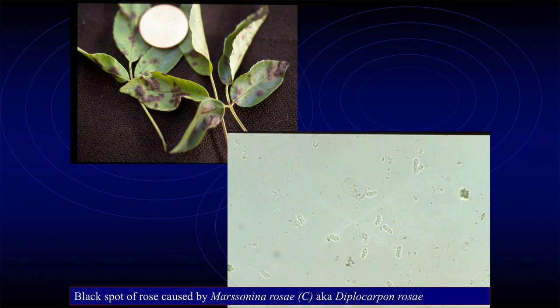Black spot of roses - another fungal disease. It causes those black spots. This is a two-cell, little tiny spore, again produced in a little matrix in those black areas of the leaf. You scrape them off, put them under the microscope, you see those spores - oh, black spot of roses. Now we know what to do about it. I can refer you to the UC pest note that talks about it.